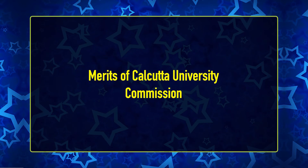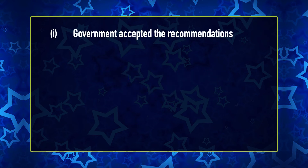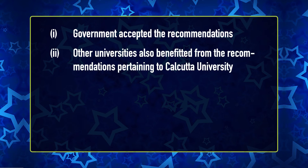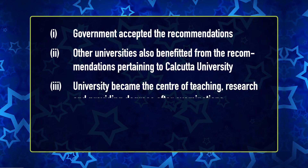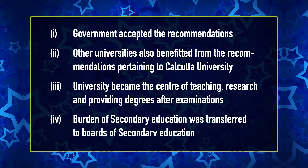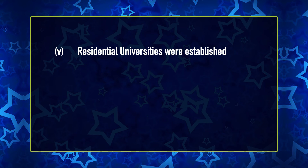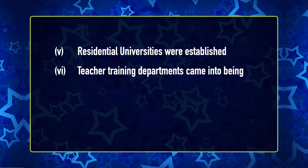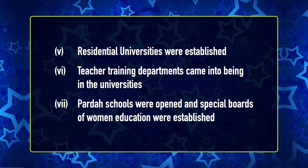The merits of the Calcutta University Commission are as follows: first, the government accepted the recommendations; second, other universities benefitted from recommendations pertaining to Calcutta University; third, the university became the centre of teaching, research and providing degrees after examinations; fourth, the burden of secondary education was transferred to boards of secondary education; fifth, residential universities were established; sixth, teacher training departments came into being in universities; and seventh, Parda schools were opened and special boards of women's education were established.